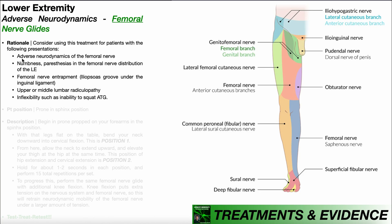Number one is adverse neurodynamics of the femoral nerve. Adverse neurodynamics is an umbrella term — it's very general. But if somebody has femoral nerve adverse neurodynamics, then certain positions or movements might reproduce numbness or paresthesia, so tingling or shooting pain, in the femoral nerve distribution of the lower extremity. Over here in this light red color, you see the sensory distribution of the femoral nerve. So if somebody was exhibiting active femoral nerve tension, you might expect those symptoms to be present in this distribution.